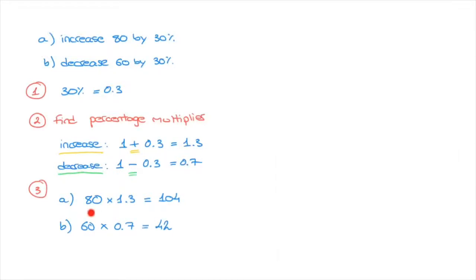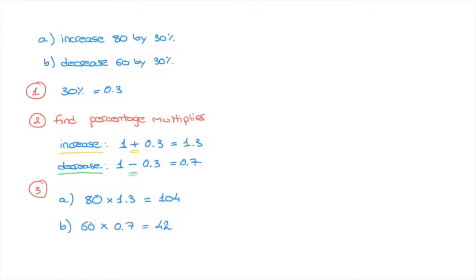We've increased 80 by 30% by multiplying it by 1.3, and decreased 60 by 30% by multiplying it by 0.7. Let's look at another quick couple of examples to make sure we've got it.